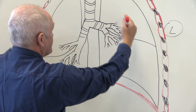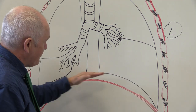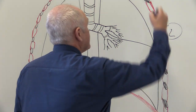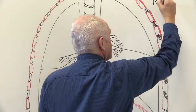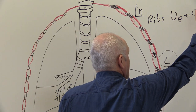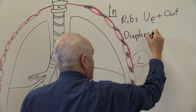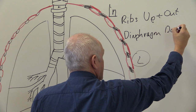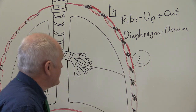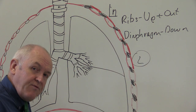So to summarize inspiration: the external intercostal muscles contract bringing the ribs up and out, and the diaphragm goes down. Both of these increase the volume of the thoracic cavity.